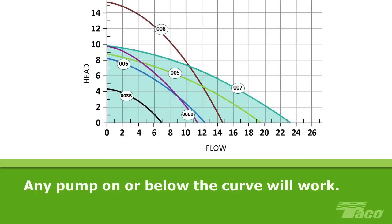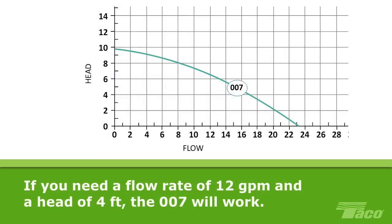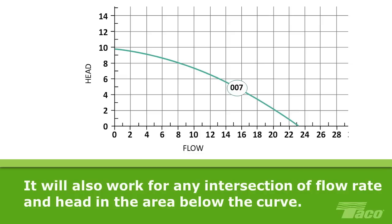Reading the pump curve makes it easy to choose a pump for a particular hydronic system. Technically, if the head and flow operating point of your system is located on or below a given pump's performance curve, then that pump will be sufficient to do the job. So if your system requires a flow rate of 12 gallons per minute and a head of 4 feet, the 007 will easily meet those requirements. It will also meet the system requirements if you need a flow rate of 6 GPM and a head of 2 feet, or 5 feet, or any other intersection of flow rate and head in the area below the curve.